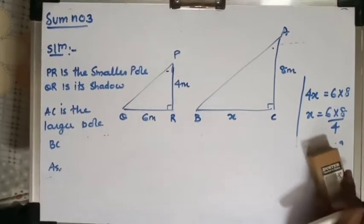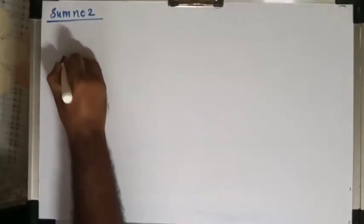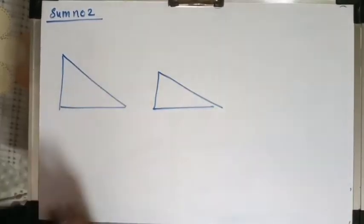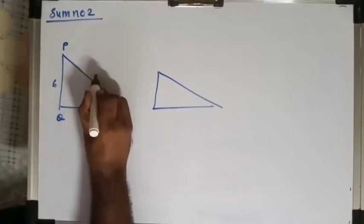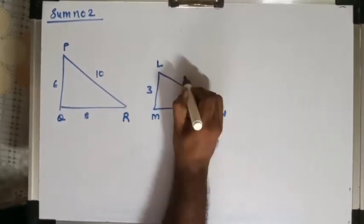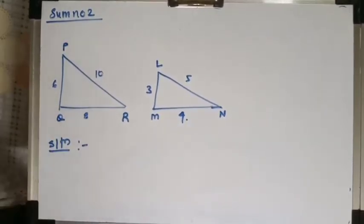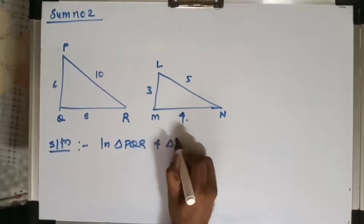Now we will be doing sum number 2. By mistake I drew the figure for sum 3 and continued with that, but now we do sum 2. Given: two triangles PQR with sides 6, 8, and 10, and triangle LMN with sides 3, 5, and 4. We need to state whether the triangles are similar and by which test. I will do the solution directly — in triangle PQR and triangle LMN.